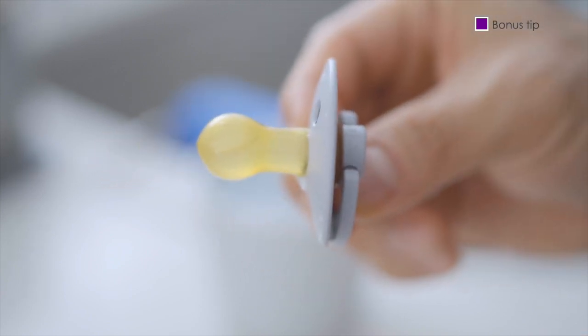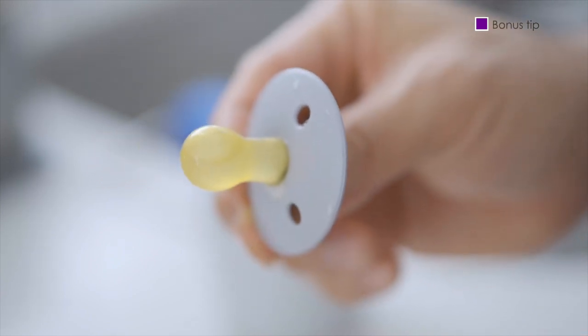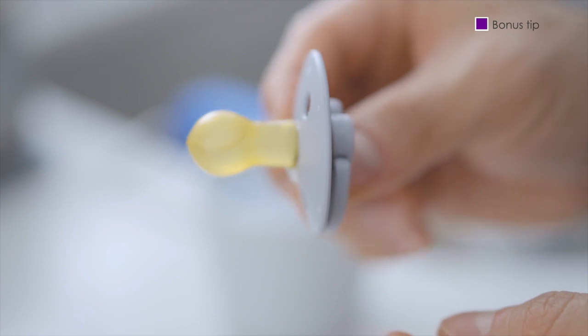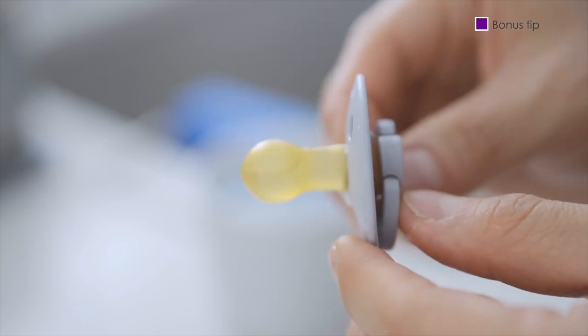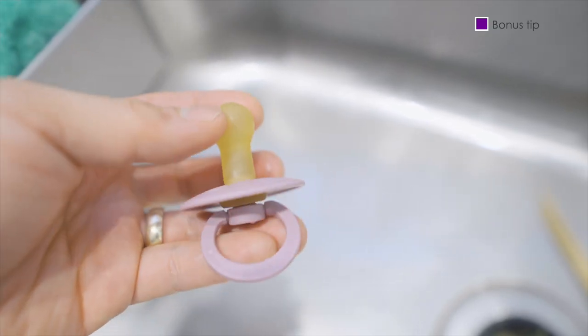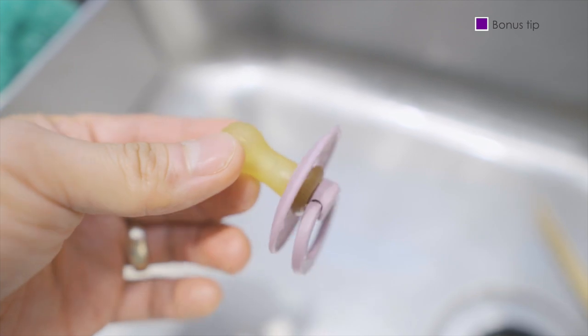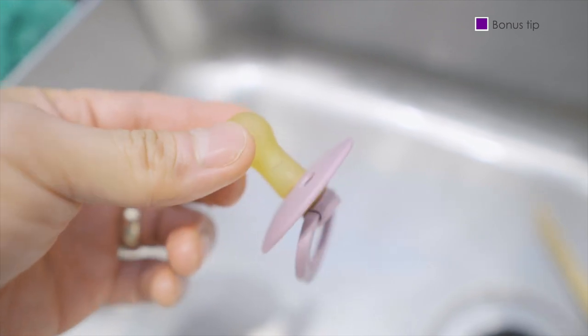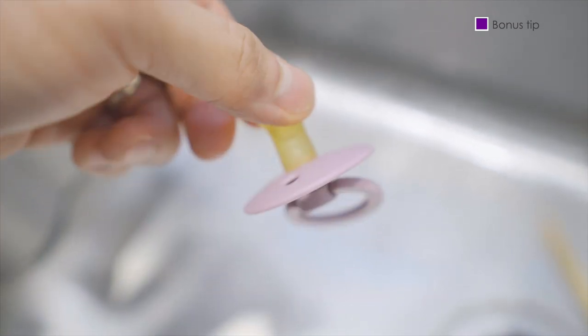One other tip is right before giving the iced pacifier, wet and melt off any ice that accumulates on the nipple surface. This is so that one, it is not too cold as in direct contact with ice for your little one and two, so it doesn't stick to the lip of your little one as you place the pacifier in their mouth.